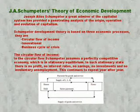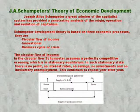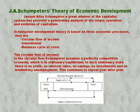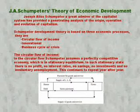His theory deals with three main important processes. The first one is the circular flow of income. The second one is innovation. And the third one is the business cycle or the crisis. He explains economic development in these three stages.